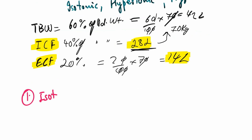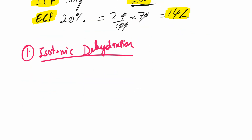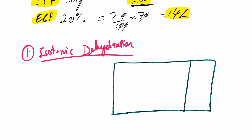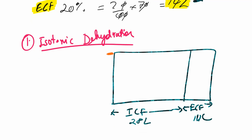Moving on to the types of dehydration, we'll first be talking about the isotonic type of dehydration. To discuss it, I will construct a normal diagram of the body fluid compartments. This is the extracellular fluid compartment at about 14 liters, and the intracellular fluid at about 28 liters. The normal osmolarity of the body is 300 milliosmoles per liter.